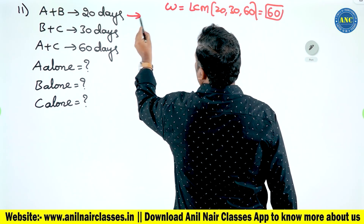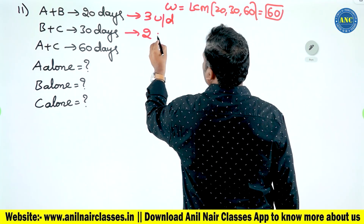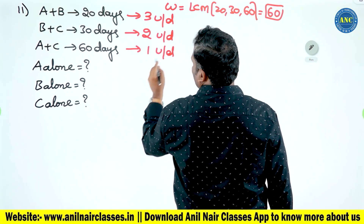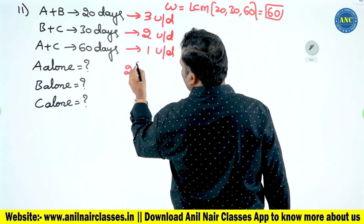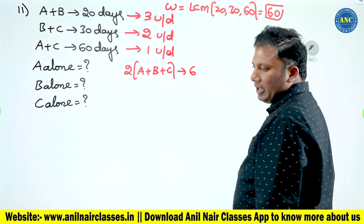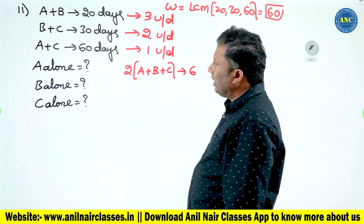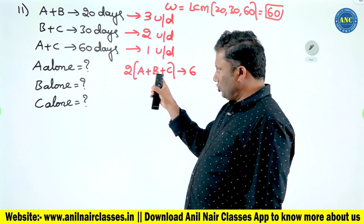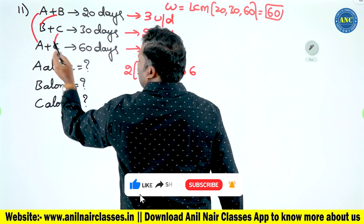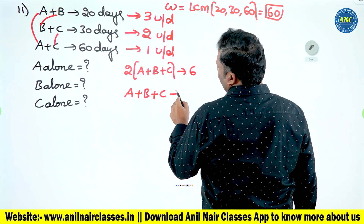LCM of 20, 30, 60 is 60. A plus B = three units per day. B plus C = two units per day. A plus C = one unit per day. Adding all: 2(A + B + C) = six units per day, so A plus B plus C = three units per day.